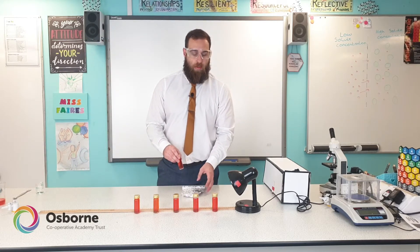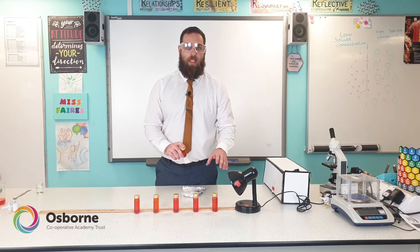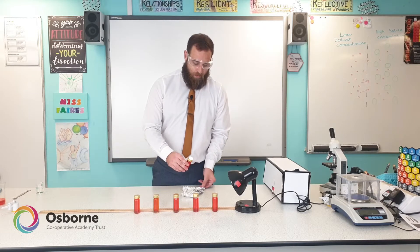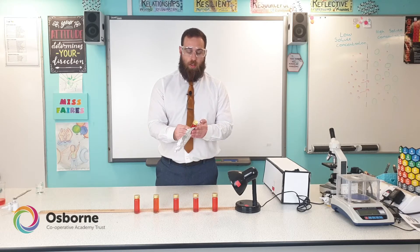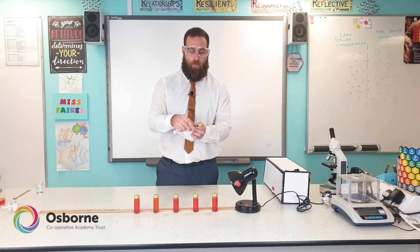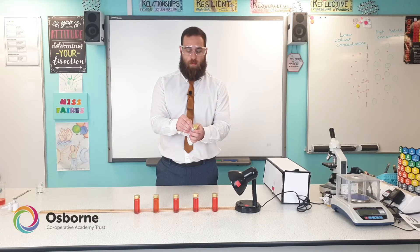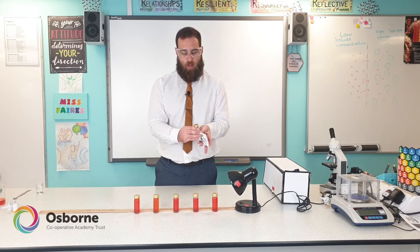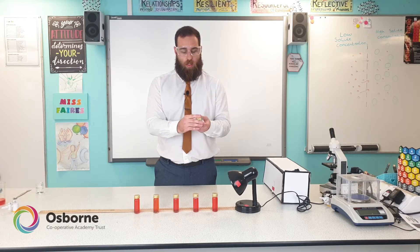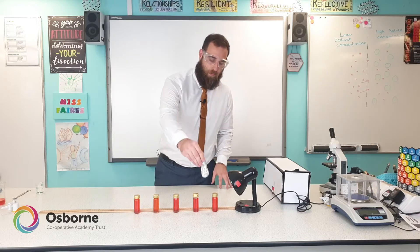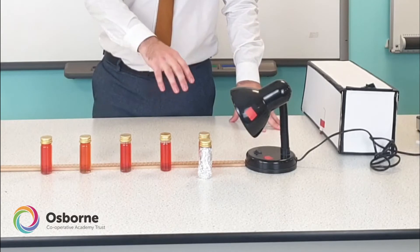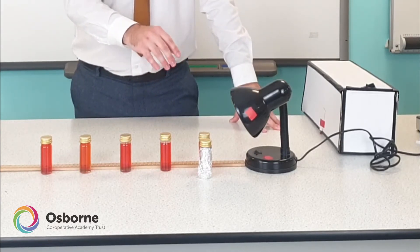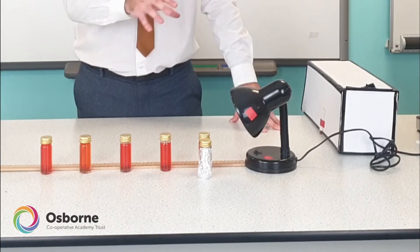Because we're testing for light intensity we need a control to ensure that the variable we're testing is actually what's causing the effect. We get a Bijou bottle with 20 algal balls in the indicator solution, but this time we wrap it in tin foil. We place it in line with the first Bijou bottle — the tin foil stops any light from getting in, so we can confirm that any changes are only happening because of light intensity.